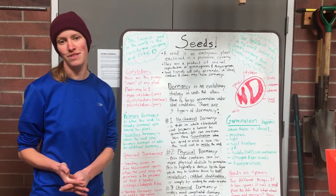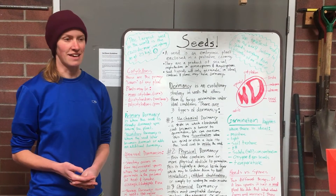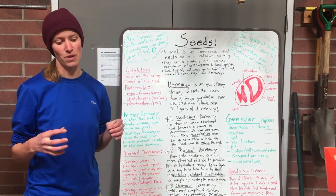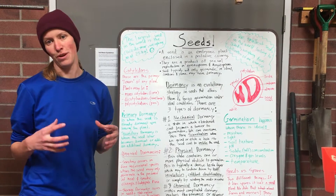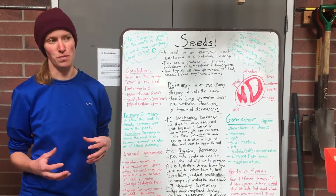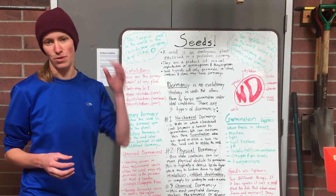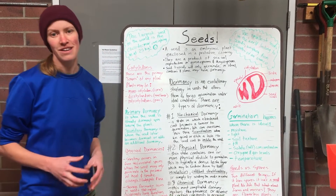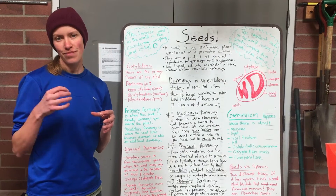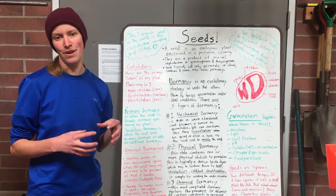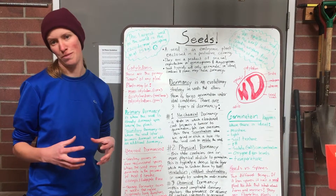The third type of seed dormancy is chemical dormancy. In this case a chemical either within or without the seed must be present or absent for the seed to germinate. A common example of this would be serotiny, in which case the seed needs the additive of smoke, fire, and ash to germinate.